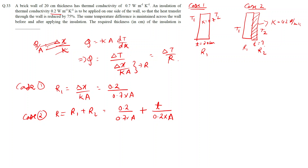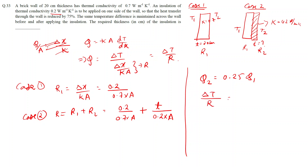In the given question, heat transfer to the wall is reduced by 75%, which means Q2 will be 25% of Q1. That is Q2 equals 0.25 times Q1. Q2 is delta T upon R and Q1 is delta T upon R1.